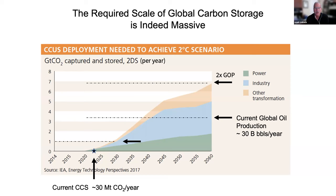By about 2038 we've got to be operating at about 3.3 billion tons per year — a volume of fluid equivalent to global oil production. Think about the size of the global oil industry: a couple million producing wells, hundreds of thousands of kilometers of pipelines, tens of thousands of facilities. By mid-century we've got to be at about twice that level. Where are we now? We're storing globally about 30 million tons of CO2 per year from man-made sources — we don't even get above the baseline.